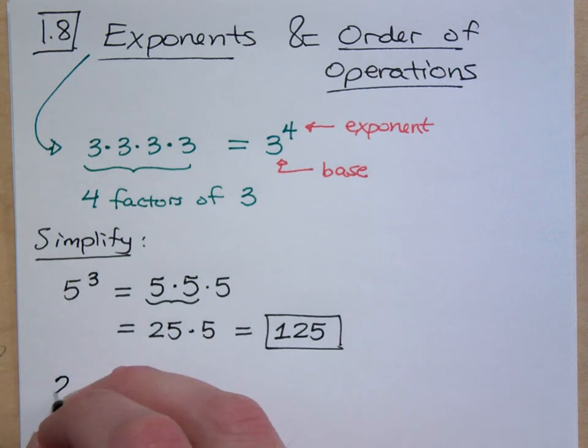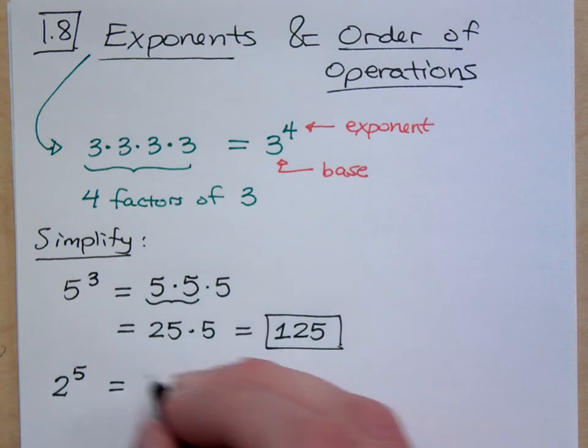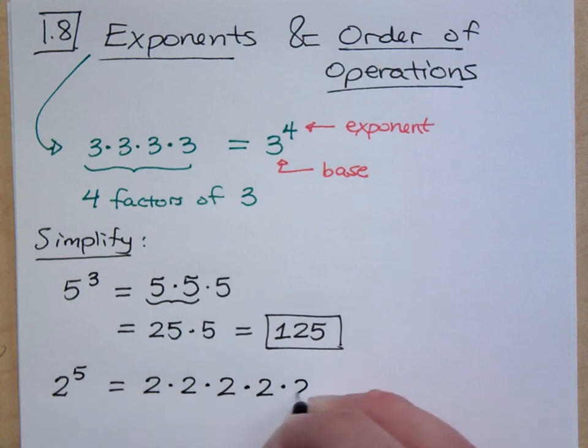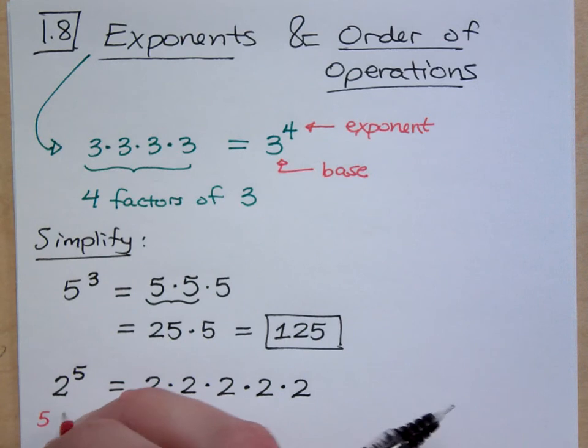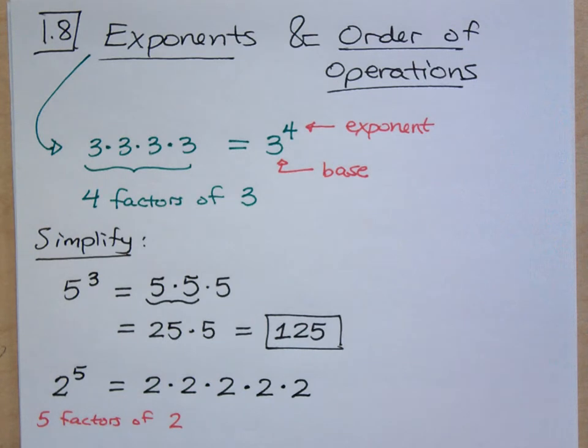What if I have 2 to the 5th power? What does that mean? How many factors of 2 do I have? I'm supposed to have 5 factors of 2. How do you know you're supposed to have 5 factors of 2? The exponent tells you how many factors of the base you have. So this tells me I need 5 factors of 2. When we see the word factor, that means we're talking about multiplication. So what's 2 times 2? 4 times 2 is 8, times 2 is 16, times 2 is 32.